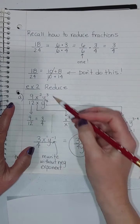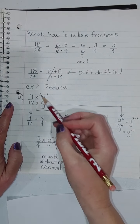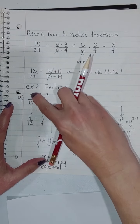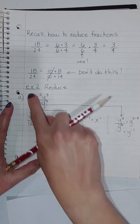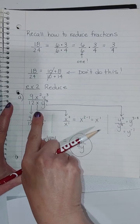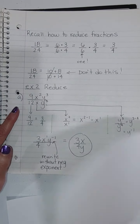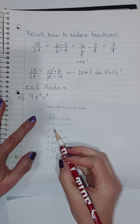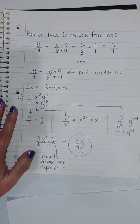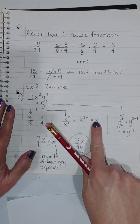Looking at one like this — this is back in chapter 5 when we did our exponent rules. You can view this as three separate problems. Look at the numerical coefficient part, the 9 over 12, and reduce that. Then pull out the x's: x squared over x, which is x to the first. Recall from the exponent rules that when you divide with the same base, you subtract the exponents.